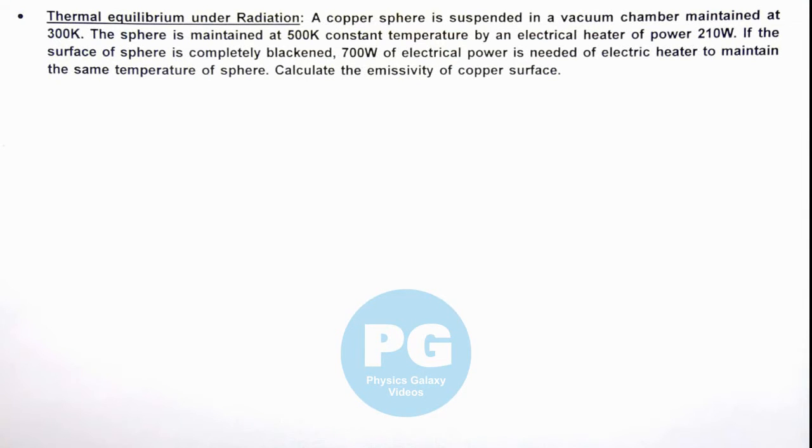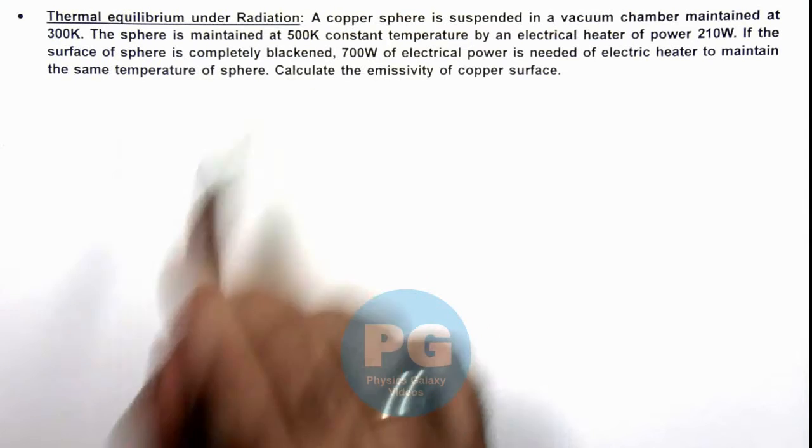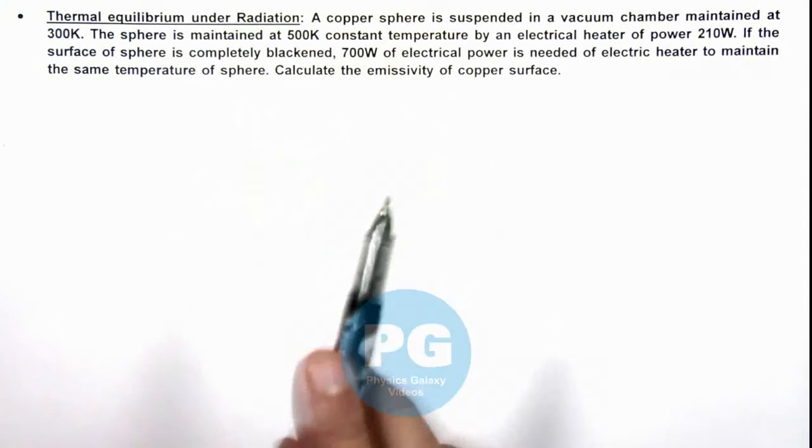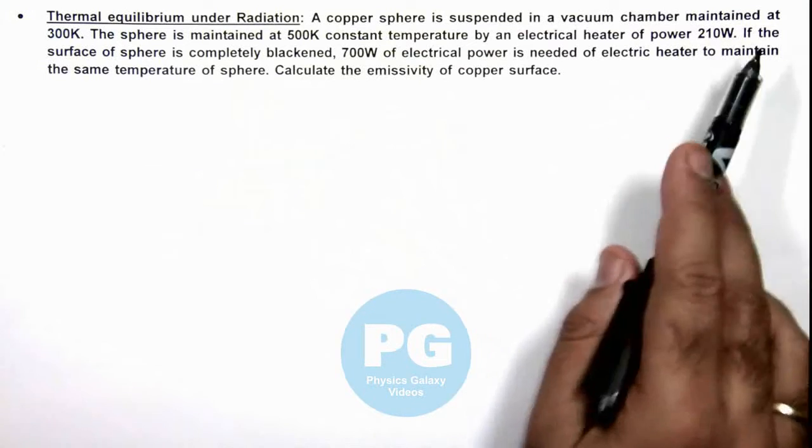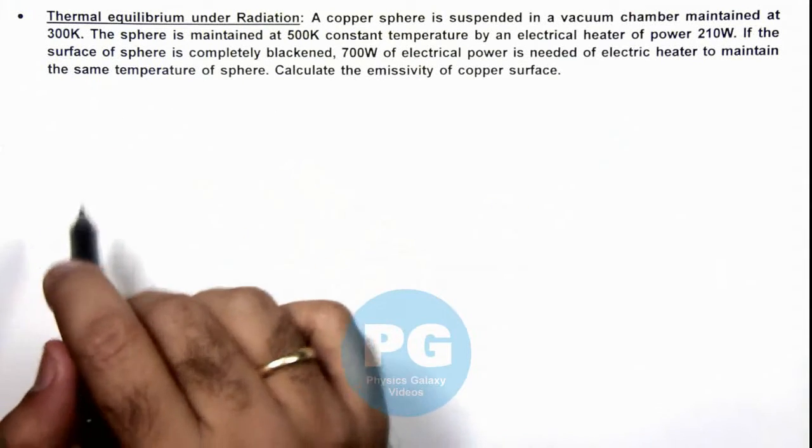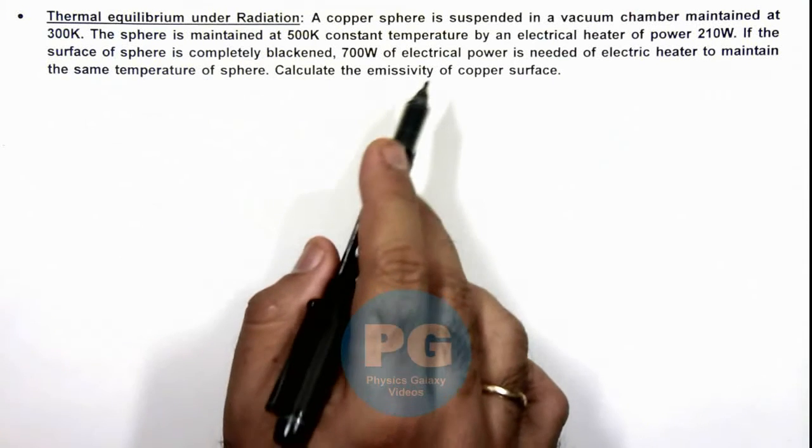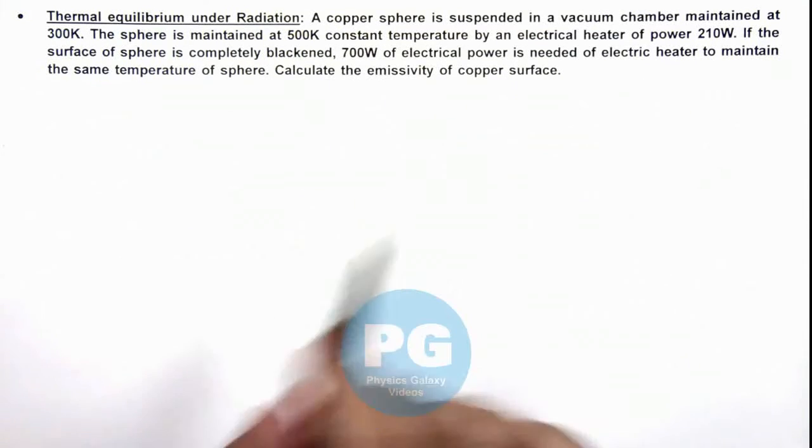In this illustration we'll analyze thermal equilibrium under radiation. We are given that a copper sphere is suspended in a vacuum chamber maintained at 300 Kelvin. The sphere is maintained at 500 Kelvin constant temperature by an electric heater of power 210 watts.